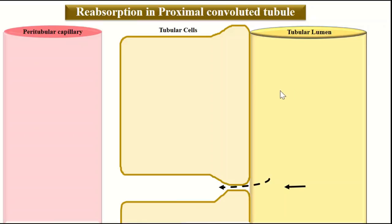Substances reabsorbed directly through the cells follow the transcellular route, while substances reabsorbed between the cells through the intercellular space follow the paracellular route. The tight junctions here are not very tight and allow the movement of water and some solutes. The reabsorption process involves almost all transport processes: primary and secondary active transport, as well as simple and facilitated diffusion.